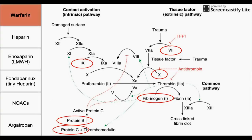If we look at the coagulation cascade here, the circled factors are the ones that are inhibited by warfarin. These circled factors are also the ones that are vitamin K dependent, meaning that if you don't have sufficient intake of vitamin K in your diet, or if it's not properly synthesized by your gut bacteria, you will have these deficiencies in the coagulation cascade.